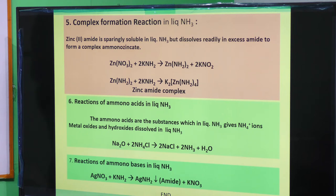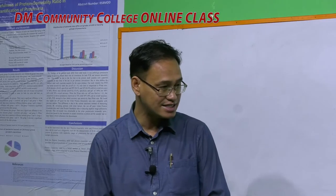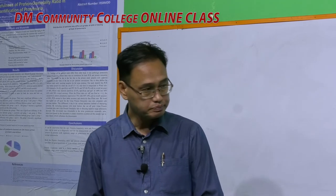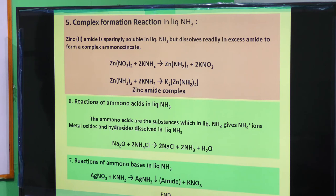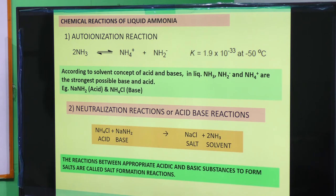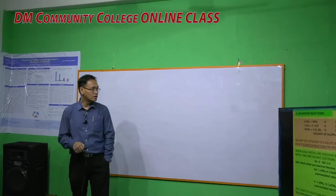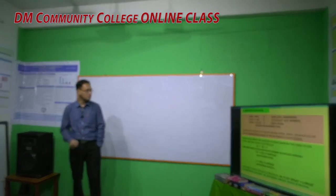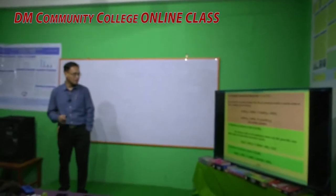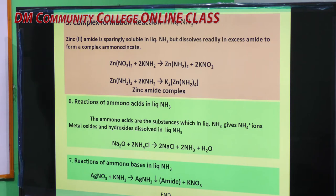The seventh reaction is amino base reactions, which are similar to amino acid reactions, except here the amide ion (NH2−) is used instead of the ammonium ion. For example, silver nitrate reacts with potassium amide to give silver amide and potassium nitrate. In summary, the seven reactions of liquid ammonia are: (1) auto-ionization, (2) neutralization/acid-base/salt formation, (3) precipitation/metathetical, (4) solvation, (5) complex formation, (6) amino acid, and (7) amino base reactions.